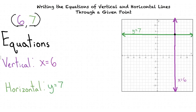So just to summarize: to find the equations of vertical and horizontal lines, we look at the x and y values of our given point. Based on those values, we write the equation of the vertical line based on the x-value, and the equation of the horizontal line based on the y-value. Thank you.